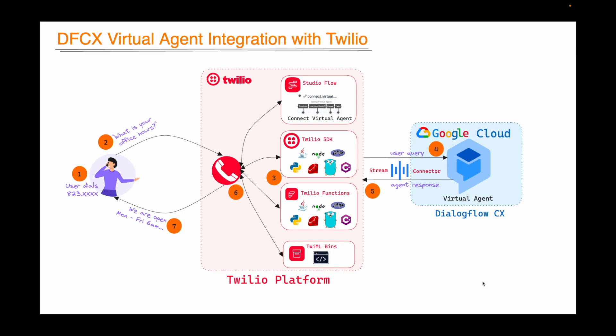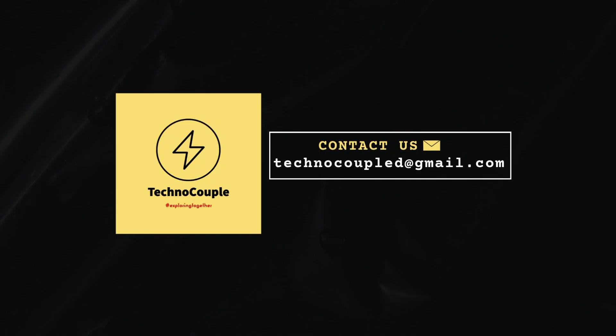Now to understand the process flow, read this diagram from left to right. This means when the user dials the phone number, the mapped Studio flow or TwiMLbin or function or webhook is executed. No matter what Twilio tool we have used, it will connect with the virtual agent over the connector, and audio — that is user utterance — streams from Twilio to DialogPro CX. Based on the intent matched by the virtual agent, it sends back the response which is played by Twilio to the caller. We will take a pause now and continue in part two of this video. Thank you.